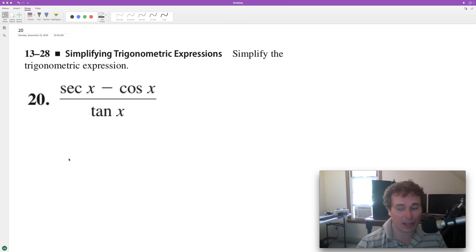Simplify the following trig expression as much as possible. First thing we'll do is break down secant into one over cosine x, and then tangent will be sine of x over cosine of x, minus cosine of x.